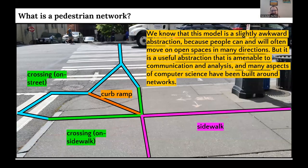We know that this model is a little bit of an awkward abstraction for pedestrian spaces. That's because people can move on these spaces in many different directions and they do that often, but it is still a useful abstraction that's amenable for communicating with one another as well as analysis. In particular, a lot of aspects of computer science have been built around networks, and that's why a lot of routing tools work well with networks.